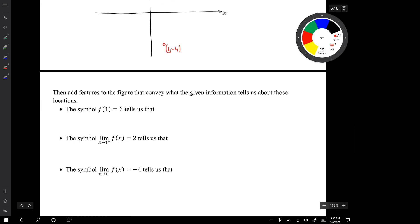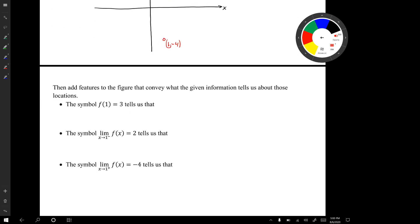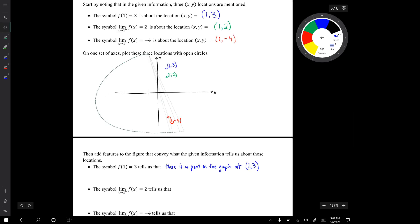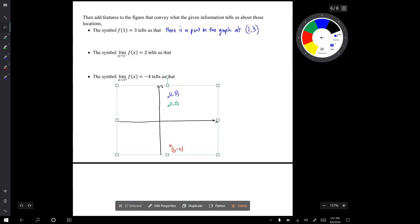Now the next job is to add features to the graph that convey what the given information tells us about those locations. So the symbol f(1) tells us that there's a point on the graph at (1, 3). So we will put that information on those axes. I'm going to make a copy of that graph down below so that we don't have to recopy the whole thing again. So our job is to put a point on the graph at (1, 3). So we fill in that circle.